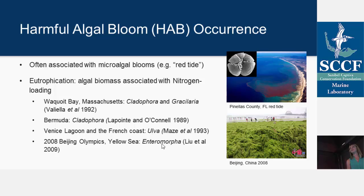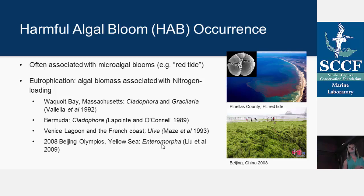This is a worldwide phenomenon. One example is Waquoit Bay, Massachusetts, where red and green algae — Cladophora and Gracilaria — have been around for multiple decades, speaking to the persistence of these blooms. In Bermuda, Cladophora mats form two to a hundred centimeters thick covering tens to hundreds of acres. Another famous one is Ulva lactuca green tides in the Venice Lagoon and the French coast. And then there was a huge bloom of Enteromorpha that caused big problems at the 2008 Beijing Olympics — one of the biggest in history.